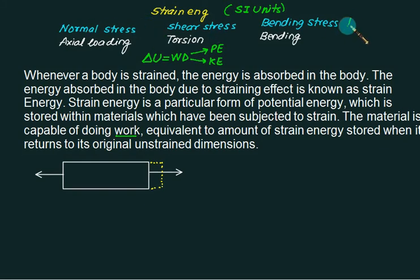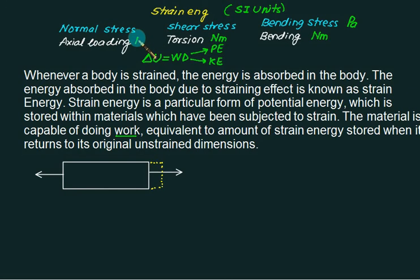All normal stresses will be in Pascal. Bending will be Newton·meter. Torque will be Newton·meter·radian. Axial loading will be force in Newtons. Length will be in meters, diameter in meters, area in meter squared, volume in meter cubed. Make this habit of SI units particularly for this chapter to avoid errors.